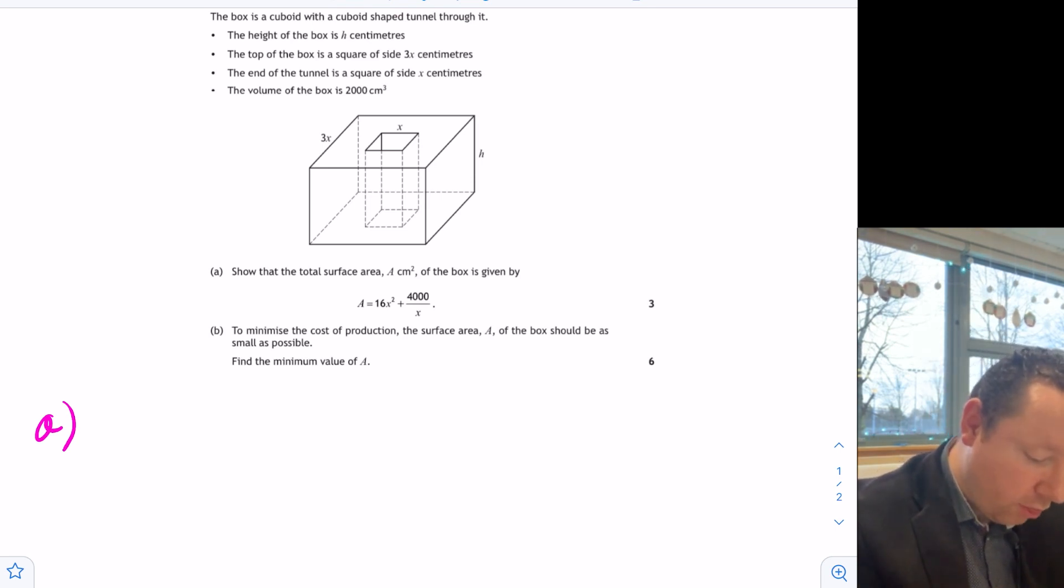So surface area, we've got 3x times h. And I can see I've got one of them, two, three, four of them. So first of all, I can write down, I've got 4 times 3xh. I'll put a dot for times in so it's clear. And then I need to add on.